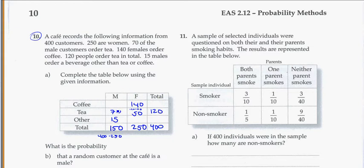Other bits of information I can fill in now. I know I've got 150 males total. And I've got 70 and 15 here. That's a total of 85. So 150 minus 85 gets me to 65. So now I have 65 males that drink coffee. And then adding that up, 65, 70, and 15 should give me 150.